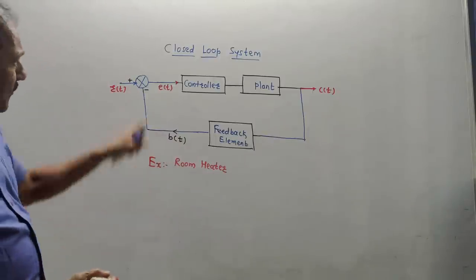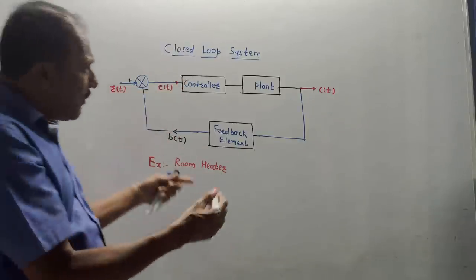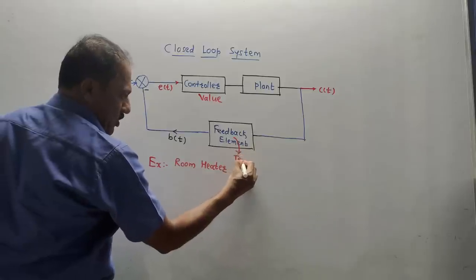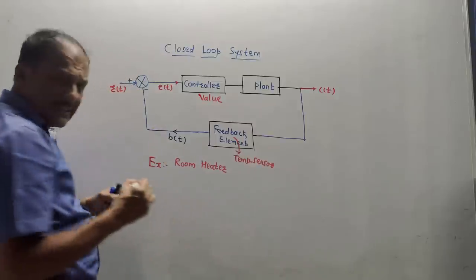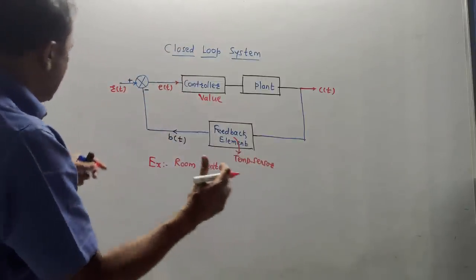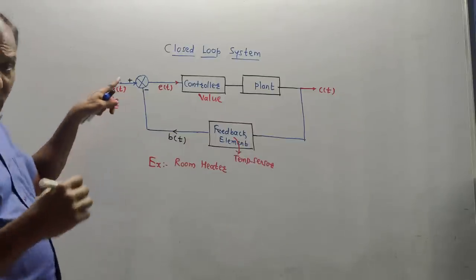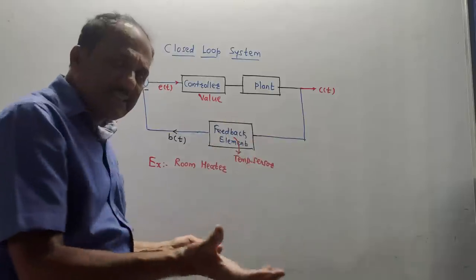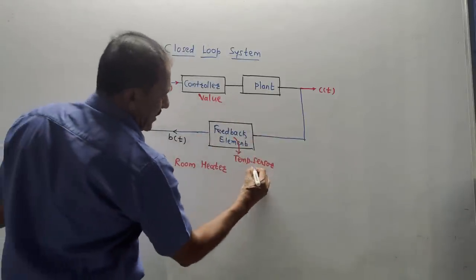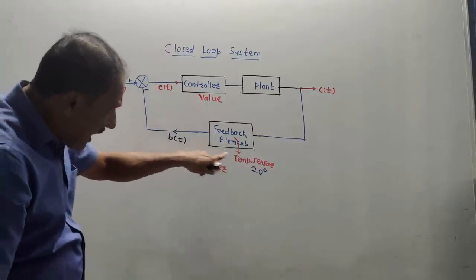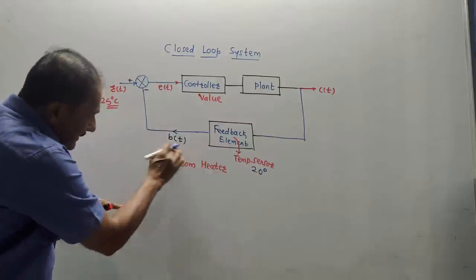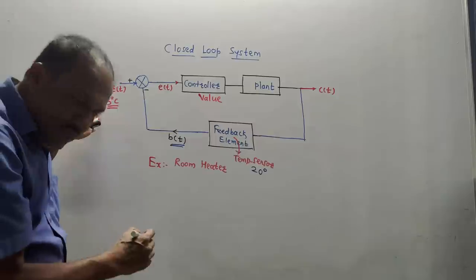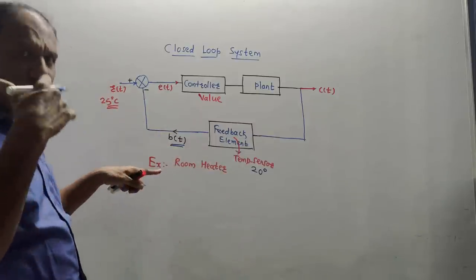A good example of a closed loop control system is a room heater. The controller will be one wall thermostat and the feedback element will be one temperature sensor. Suppose you have set the desired temperature as 25 degrees centigrade — this is known as the reference temperature. The temperature sensor acting as the feedback element senses the actual room temperature; let us say it is 20 degrees. The output of the temperature sensor, which is 20 degrees, is denoted by b of t — the feedback signal. r of t is the reference input set at 25 degrees, and the difference between these two values is 5 degrees.